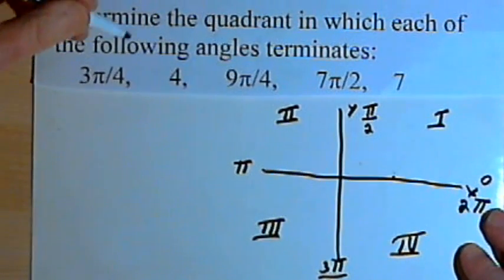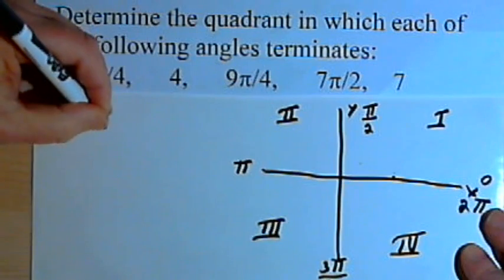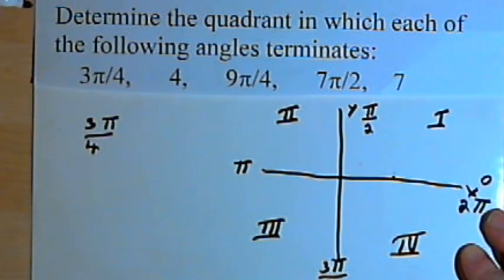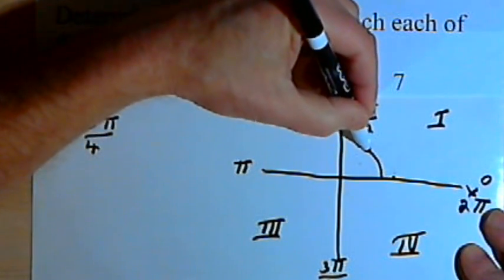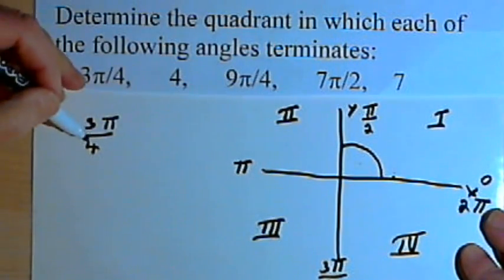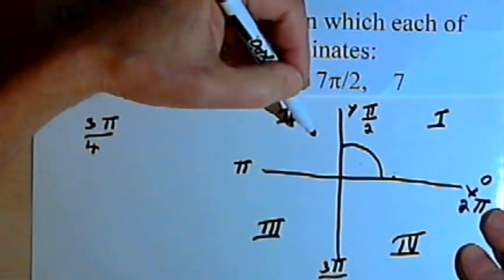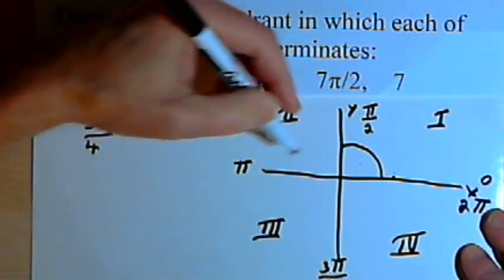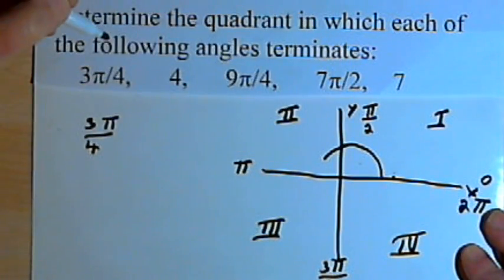So I'm asked to find out where an angle that measures 3π/4 is going to terminate. So it starts out in standard position, travels through the first quadrant. That's 1-half π. I want to go 3-quarters π. Well, 3-quarters is between 1-half and 1, so that means I must end up somewhere in the second quadrant.